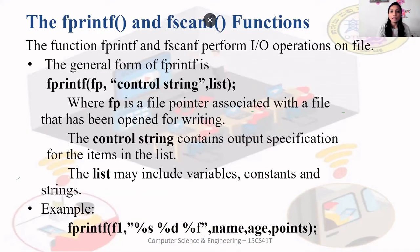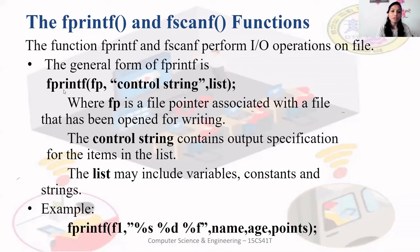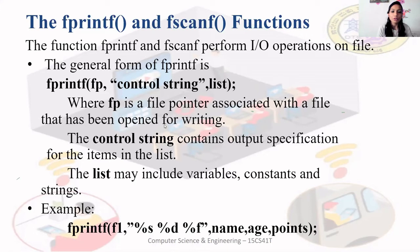fprintf and fscanf are for files, just as printf and scanf are for the console. The syntax for fprintf is: fprintf(fp, control_string, list), where fp is the file pointer for a file opened for writing, the control string contains format specifiers like %d, %s, %c, %f, and the list may include variables, constants, and strings.